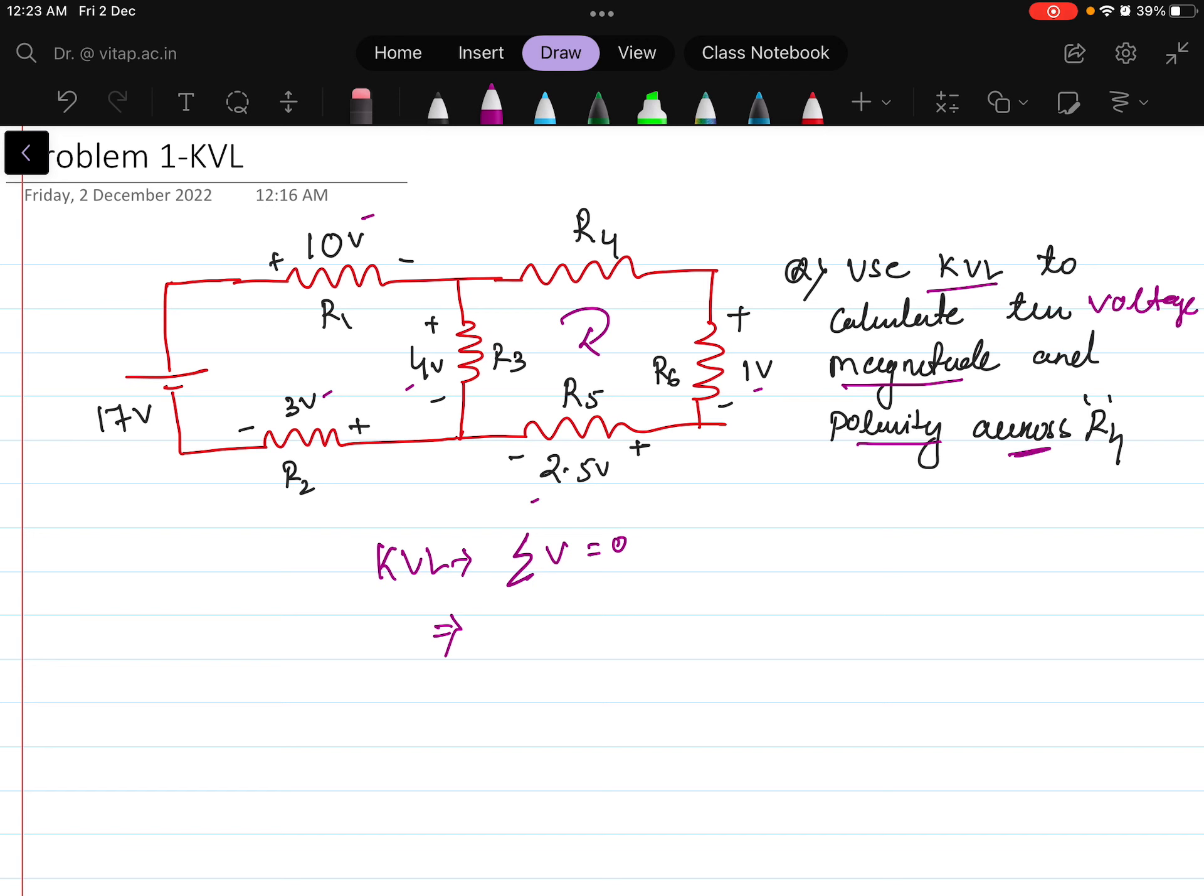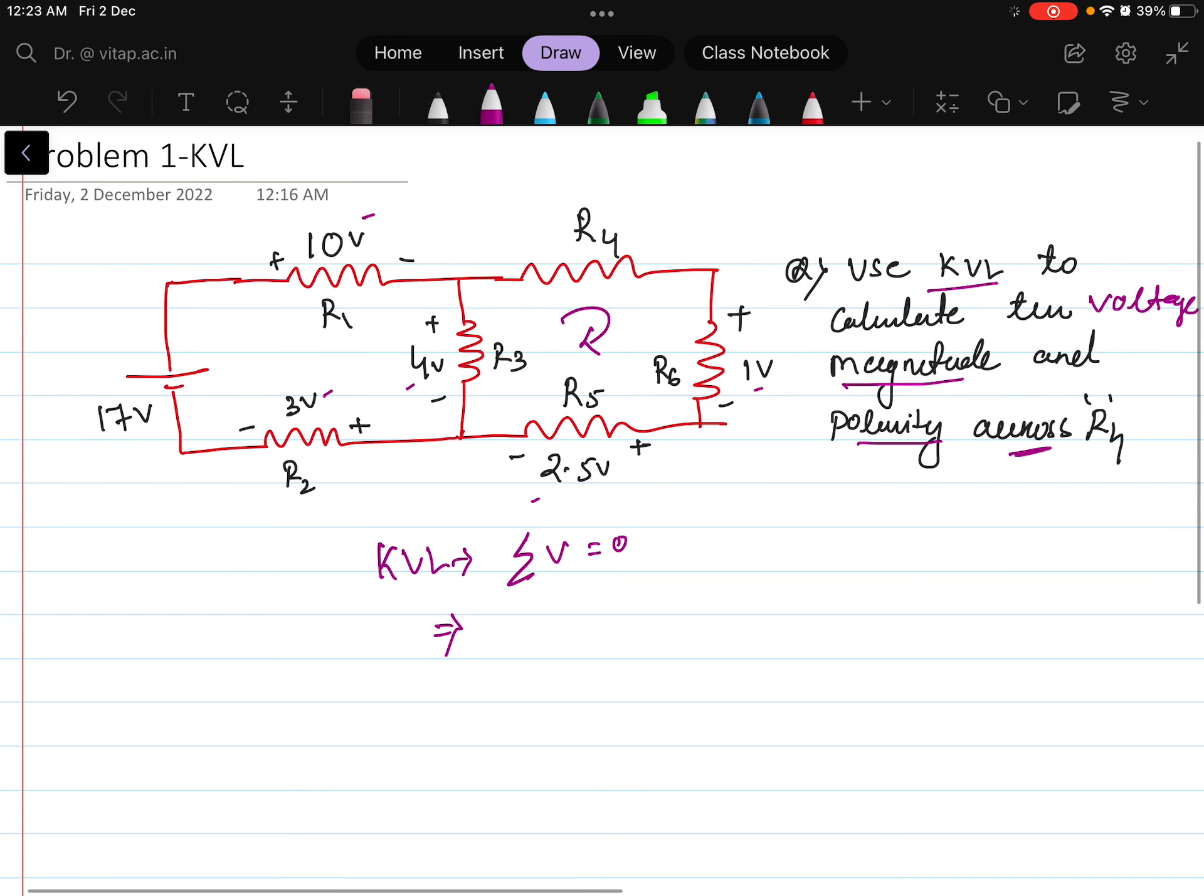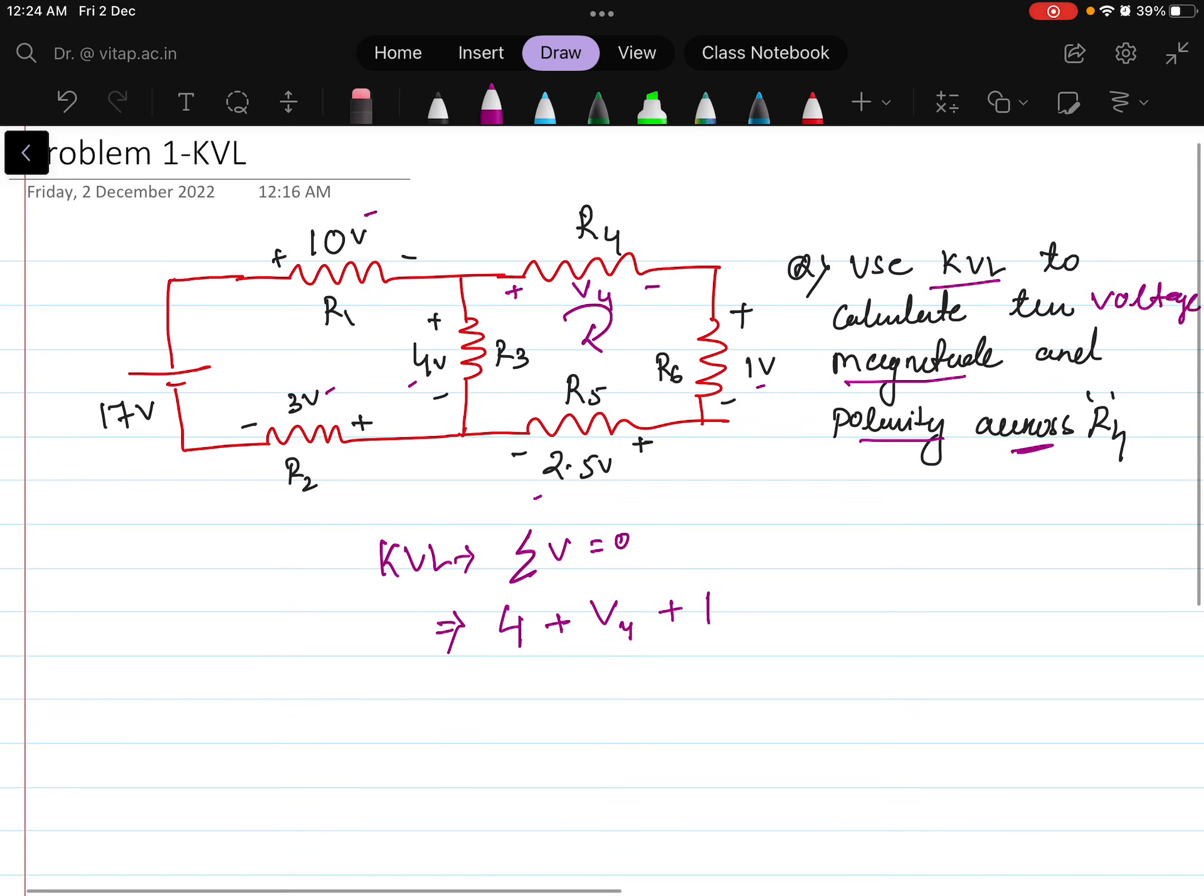In this way we can write: what is the voltage here? 4. If I consider this as plus, this as minus while doing the KVL, it will be let us say plus V4. The voltage across R4 I am taking as V4. Let us take this as V4 plus across R6 the voltage is 1. You can see the polarity is already given so we can take 1 plus. Here the polarity is given as 2.5.